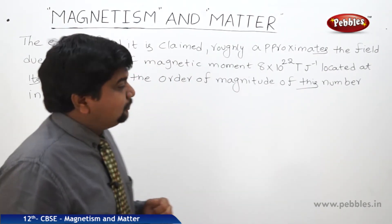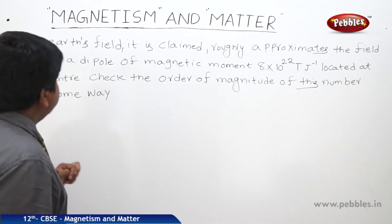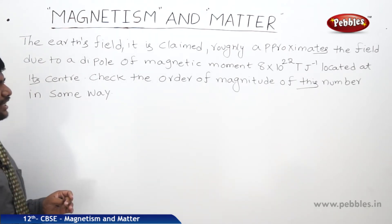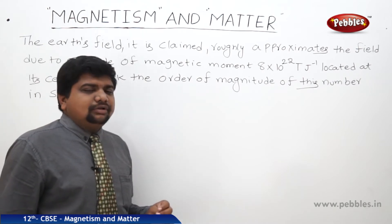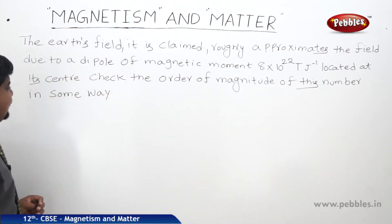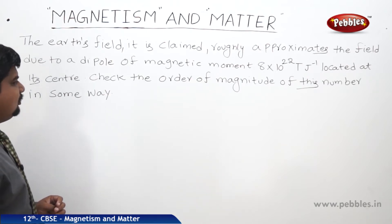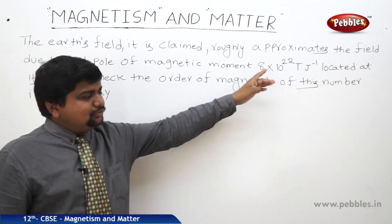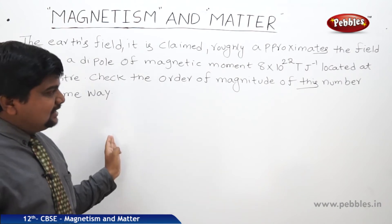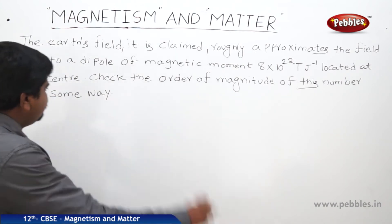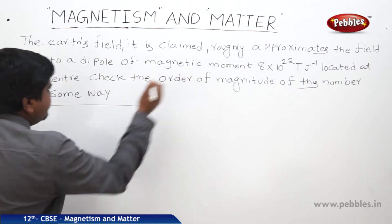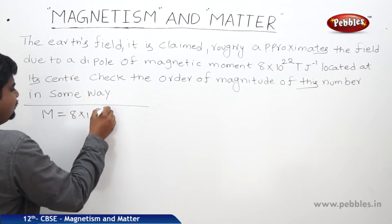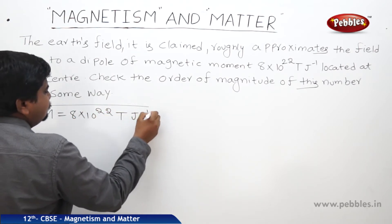Here is one more problem related to the Earth's magnetic field. The Earth's field roughly approximates the field due to a dipole of magnetic moment 8×10²² J/T located at its center. We need to check the order of magnitude of this number. The magnetic moment M is taken as 8×10²² J/T.